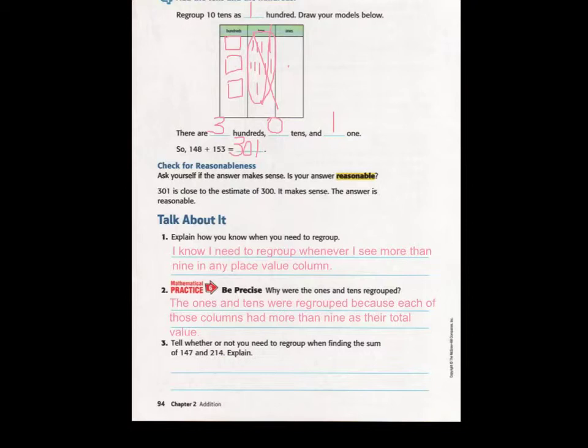Because you are such great thinkers, I am sure you and your team came up with an answer similar to what is here. I know I need to regroup whenever I see more than 9 in any place value column. Why were the 1's and 10's regrouped? The 1's and 10's were regrouped because each of those columns had more than 9 as their total value. Now, pause this lesson one more time.